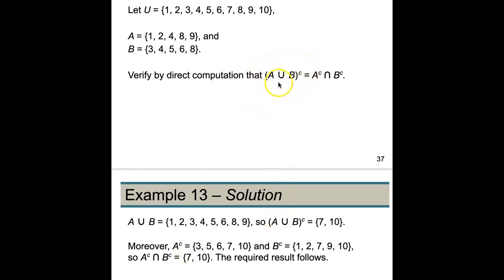So that's the left side of our equation here, it's the set that contains {7, 10}. Now let's look at A^c ∩ B^c. So A^c is everything in here that is not in A, so A^c is going to be {3, 5, 6, 7, 10}.